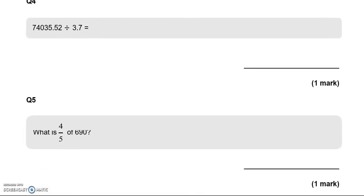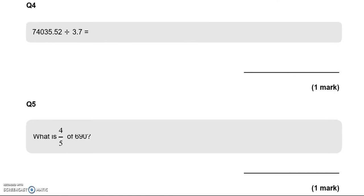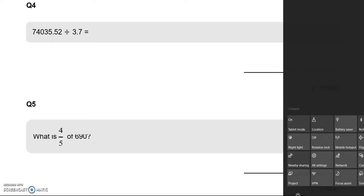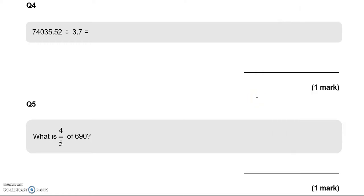Question 4. 74,035.52 divided by 3.7 is equal to what? We can use a calculator. So we're just going to input this into the calculator now. This is 20,009.6.